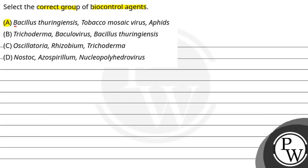The first option is Bacillus thuringiensis, tobacco mosaic virus, aphids. Then option B we have is Trichoderma, Baculovirus, Bacillus thuringiensis.